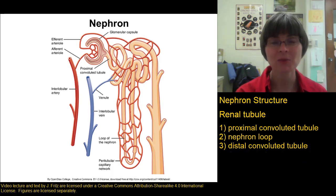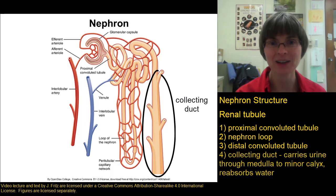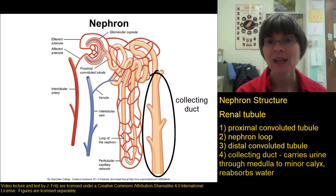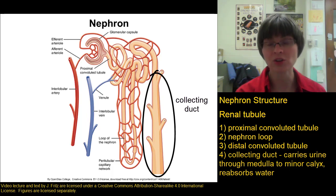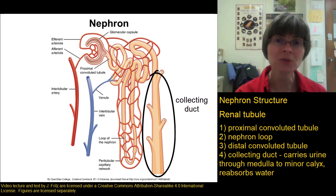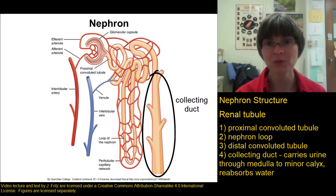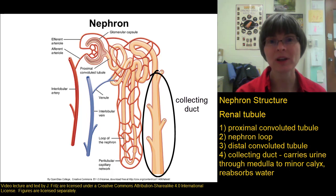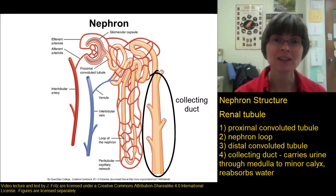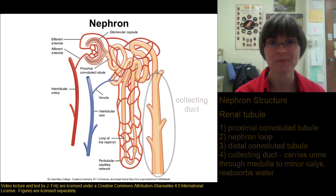The final part of the renal tubule is the collecting duct, and several nephrons can share the same collecting duct. The collecting duct carries the filtrate — which we can now call urine — down through the medulla of the kidney to the tip of the renal pyramid, where it drips into a minor calyx. In addition to transporting the urine down through the renal medulla, the collecting duct is also important for conserving additional water, so more water is reabsorbed from the collecting duct as well.